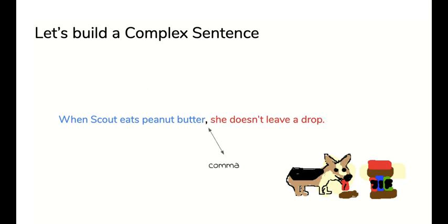So let's go ahead and put those together. When Scout eats peanut butter, she doesn't leave a drop. Notice where the comma goes right between the blue and the red. So when you put those two sentences together, you need a comma because you're showing that they're joined now.